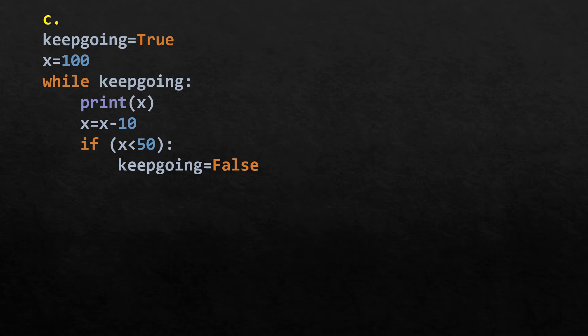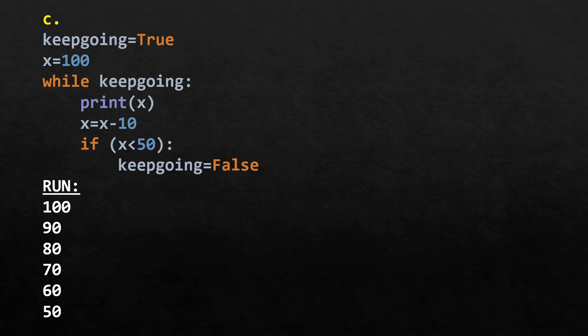Here keep_going is initialized to True and x to 100. While keep_going is True, it prints x, decrements x by 10, and if x is less than 50 sets keep_going to False. The output is 100, 90, 80, 70, 60, 50. When x becomes 40, keep_going becomes False and the loop stops.